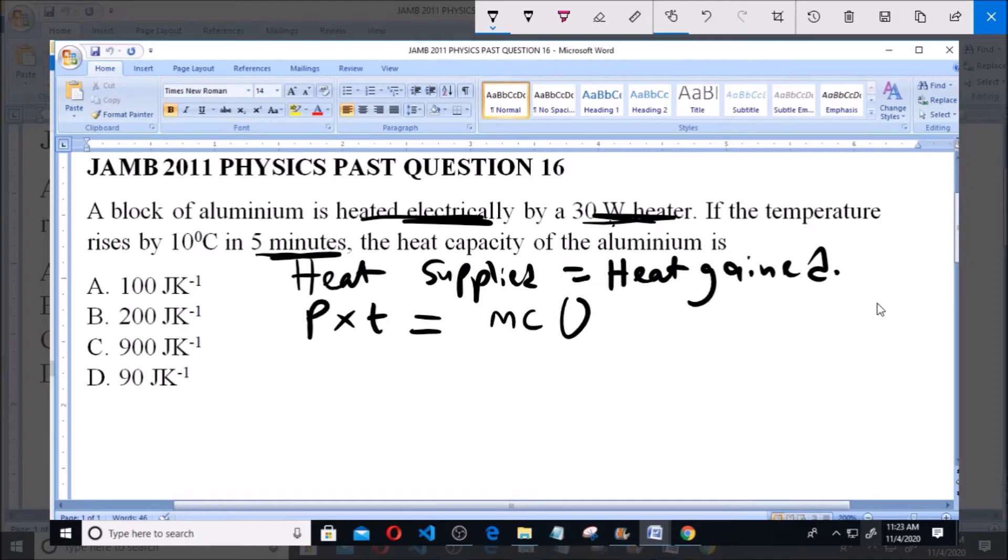And this is equal to MC theta. Heat gain is equal to MC theta. So M is the mass of whatever is given to you, C is the specific heat capacity, and theta is the heat change or the heat gain.